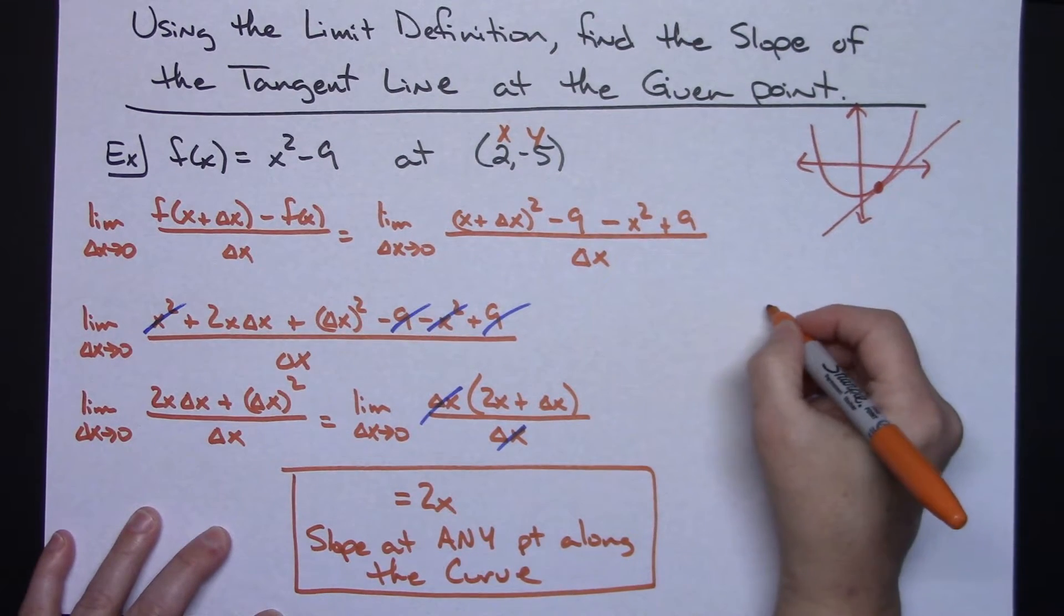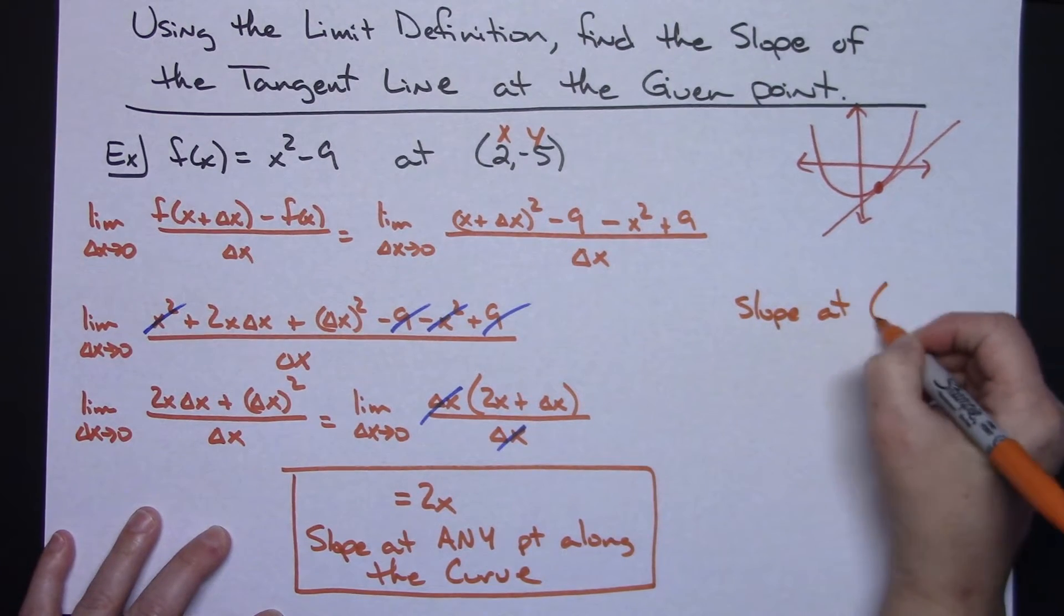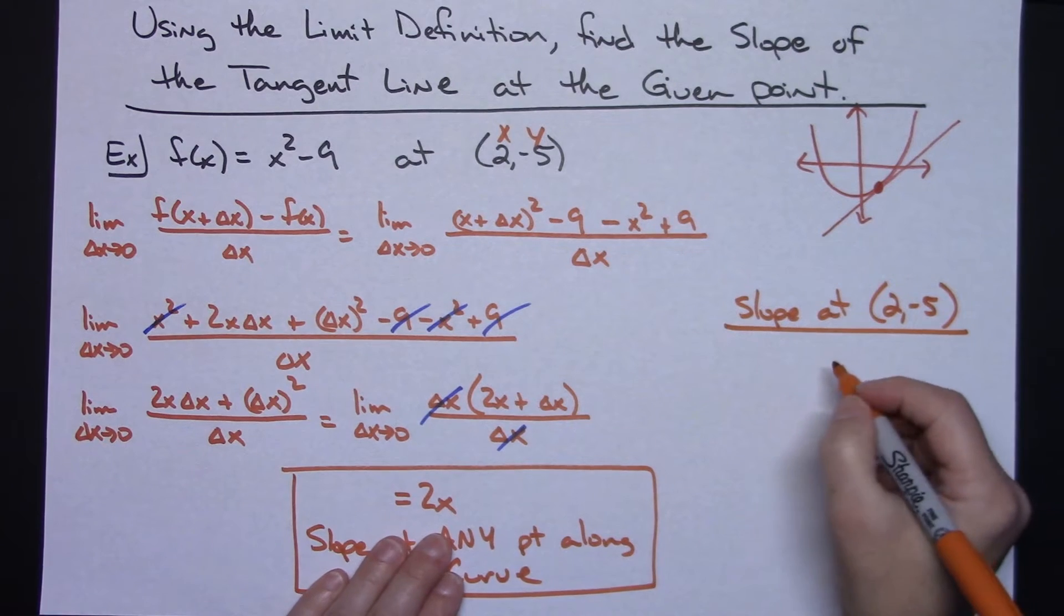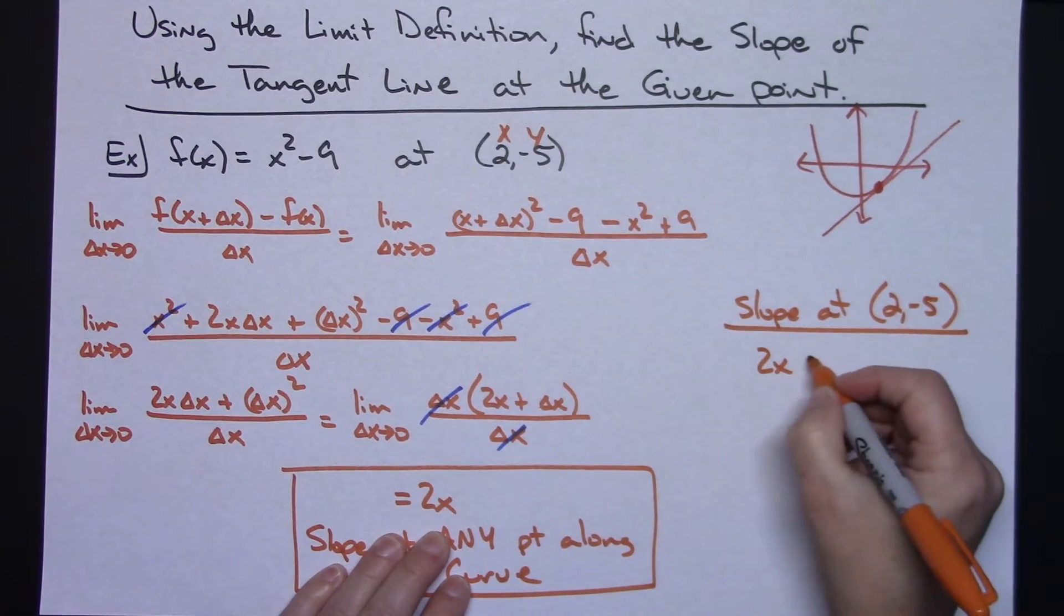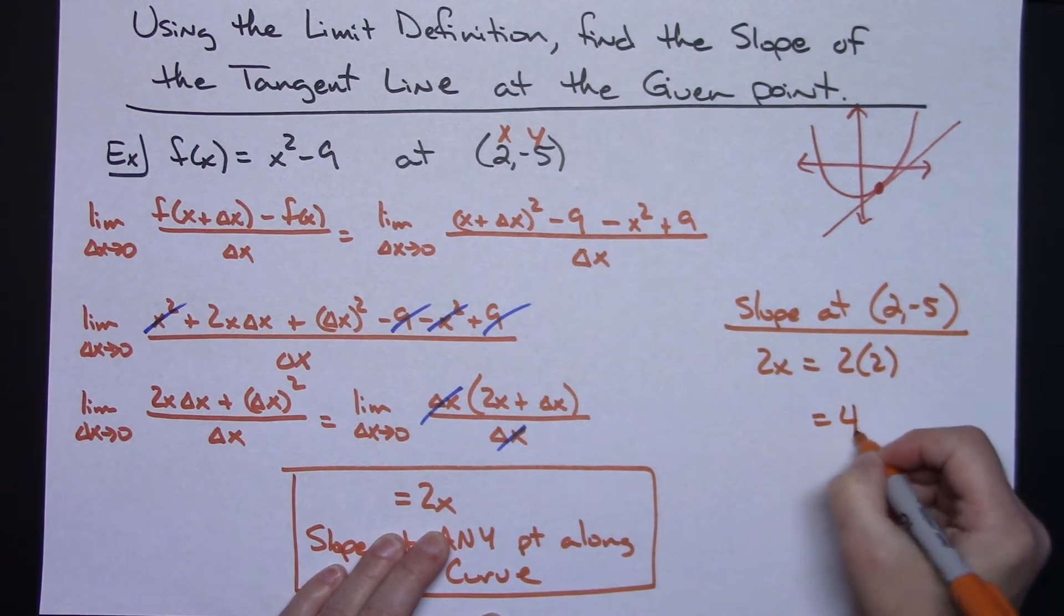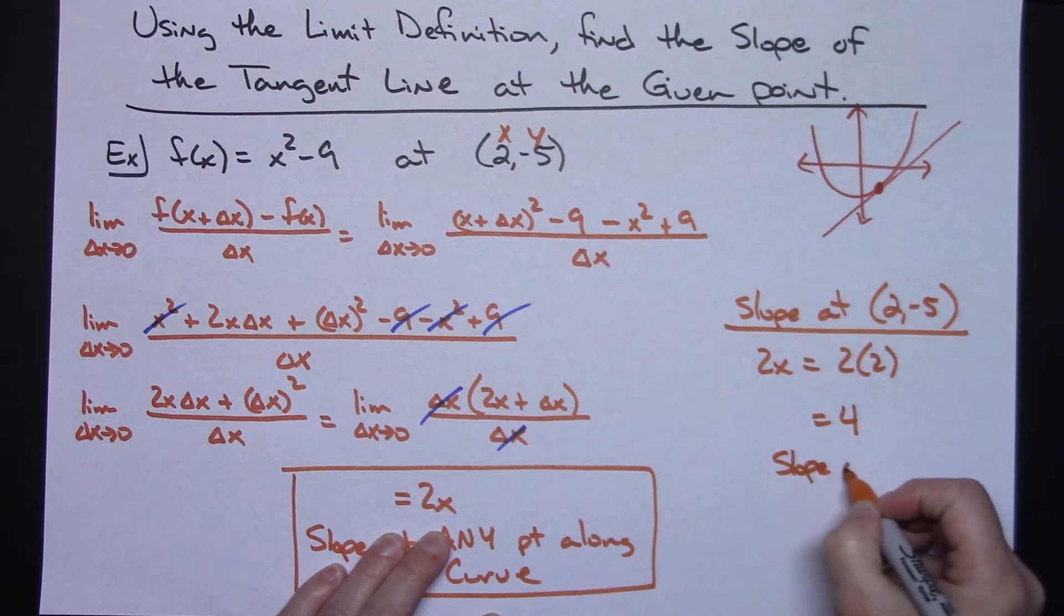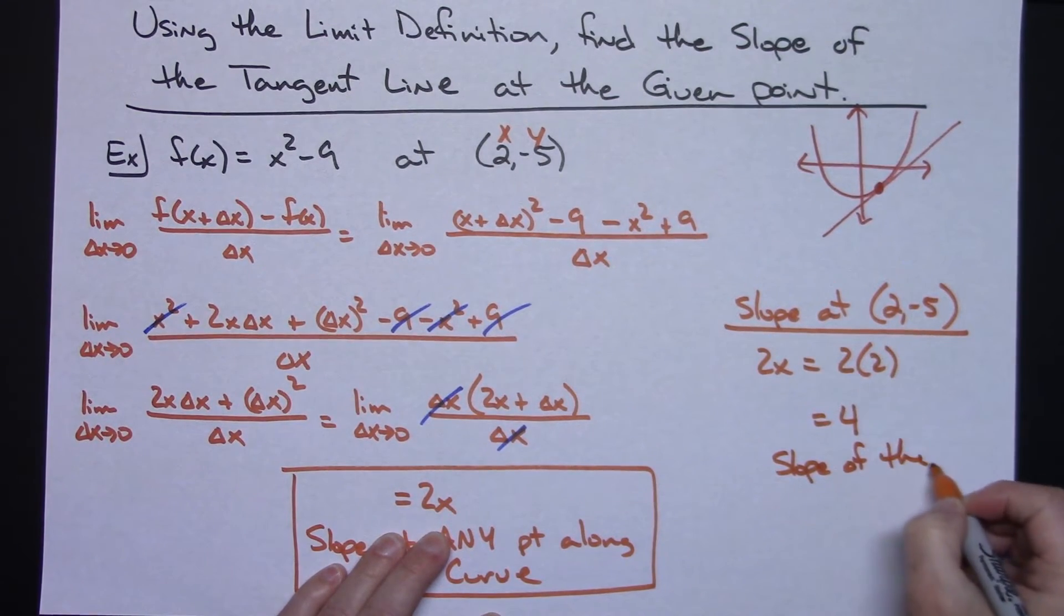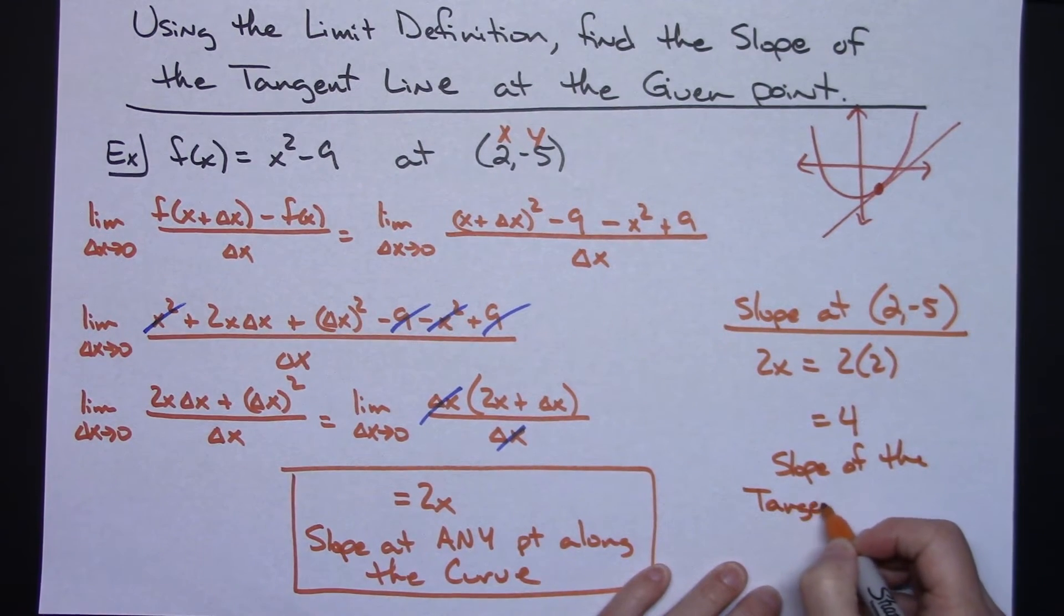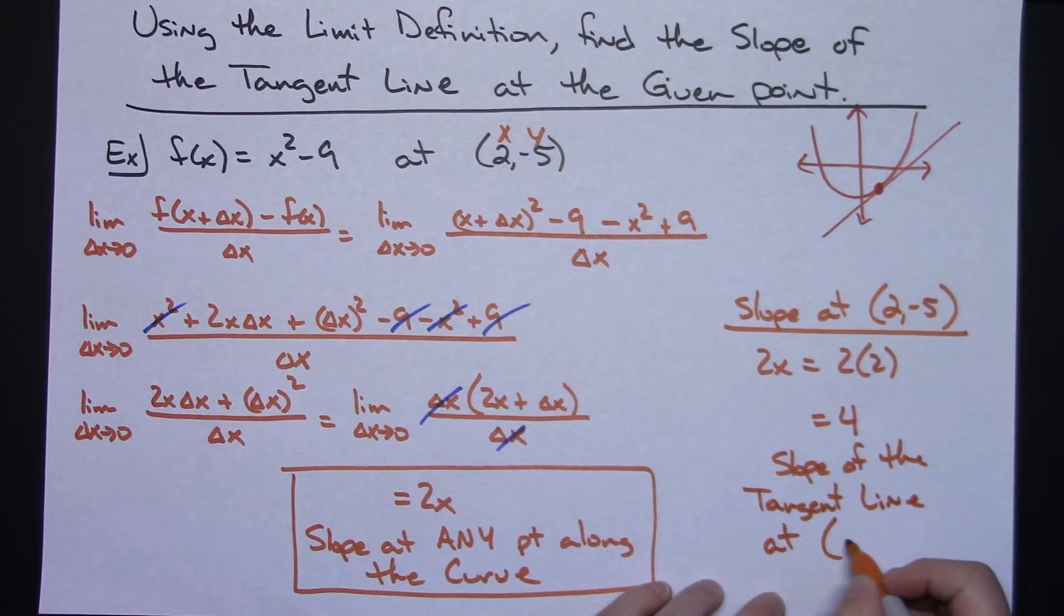This is my x-coordinate, this is my y-coordinate, so it's a matter of plugging it in. The slope at the point 2 negative 5 means I'm going to take this 2x and plug in my x value, so 2 times 2 which is going to give me a 4.